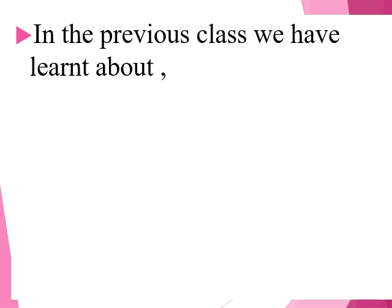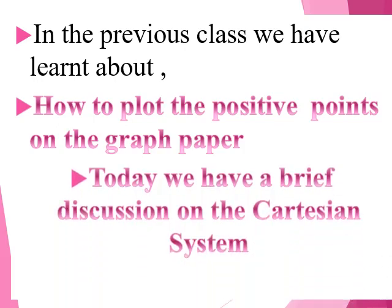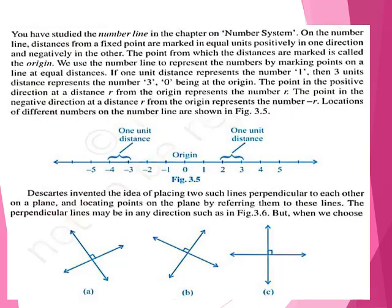In the previous class we have learnt about how to plot positive points on the graph paper — that is, in standard eighth you studied how to plot positive points on the graph paper. Today we have a brief discussion on the Cartesian system. You have studied the number line in the chapter on number system. On the number line, distances from a fixed point are marked in equal units — positively in one direction and negatively in another. The point from which the distances are marked is called the origin, where zero is the origin.